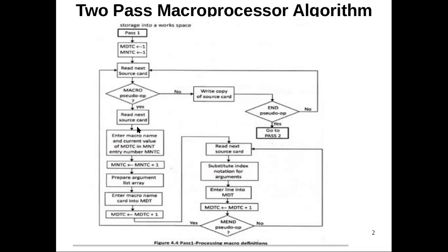We are reading the second line of the macro definition, which is the line containing the macro name and dummy arguments. Whenever we see this line, the name of the macro and the pointer to the definition of the macro — that is, the current MDTC value — has to be stored into the macro name table at the MNTC position. After entering the macro name into the macro name table, we increment the macro name table counter by one, because we have made one entry. This ensures the counter points to the next available position for the next macro name.